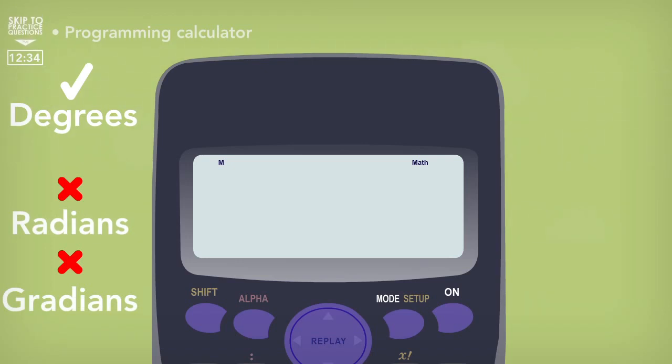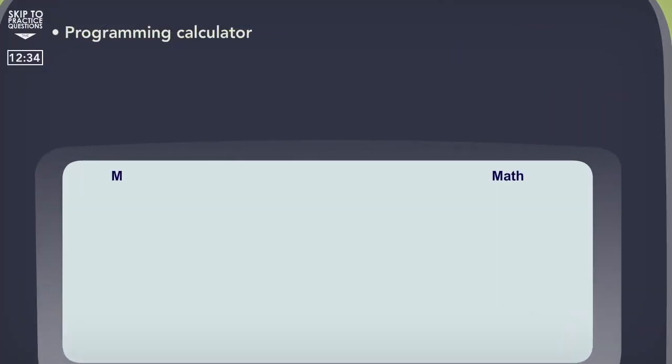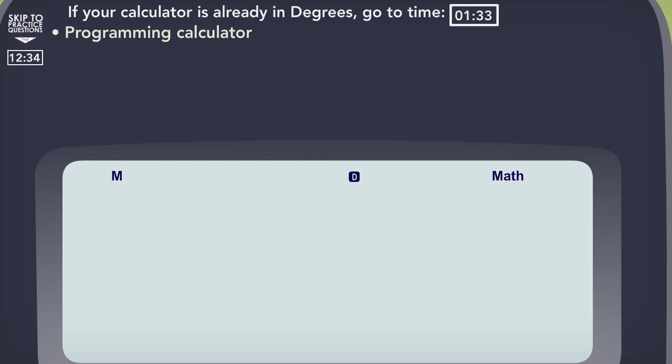Yep, those are both real things. If your calculator is set to degrees then it will display the letter D at the top of the screen like this. If you see this then you're basically fine and you can ignore this next bit. However, if your calculator displays a small r or a small g then your calculator is set to radians or gradients and this needs to be changed.